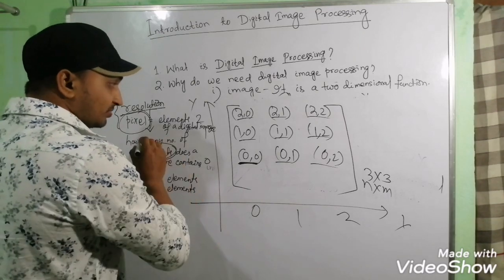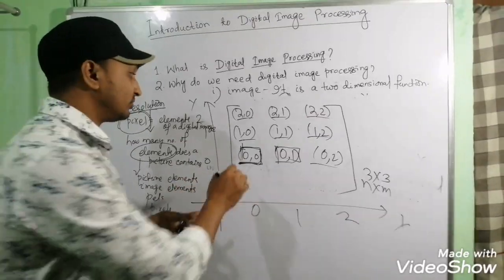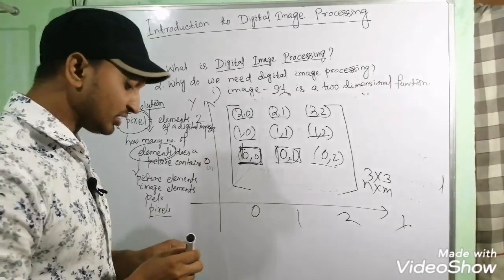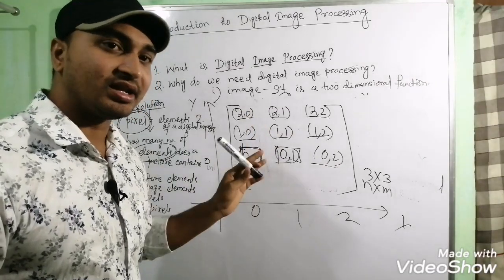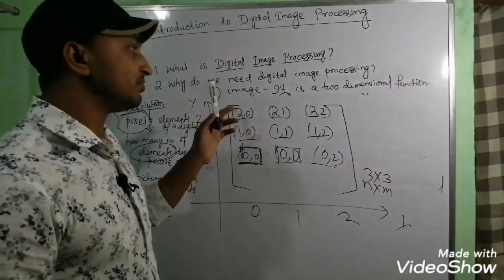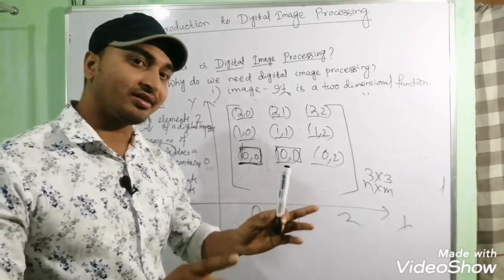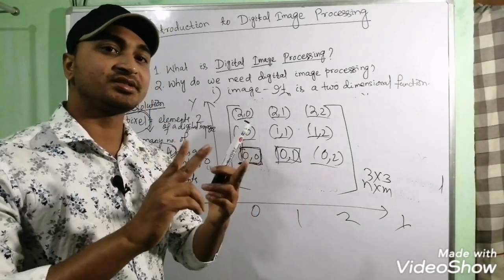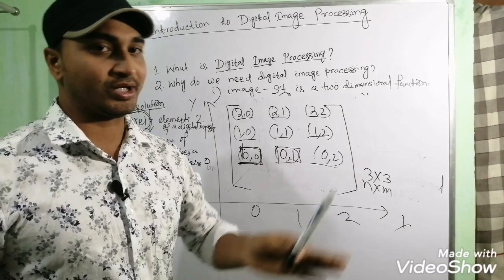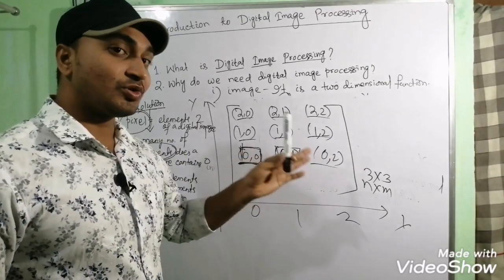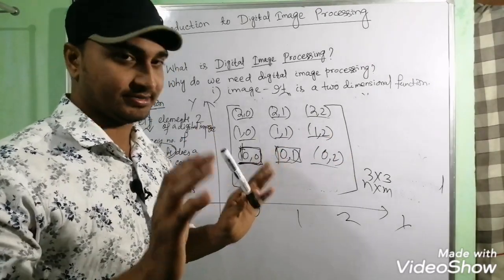I think now all of you understand what an image is. Finally, the definition: an image may be defined as a two-dimensional function f(x, y), where x and y are spatial or plane coordinates, and the amplitude of f at any coordinates (x, y) is called the gray level or the intensity of the image at that point.